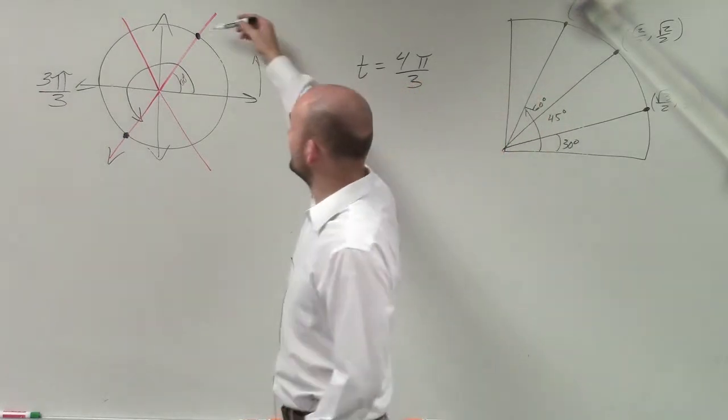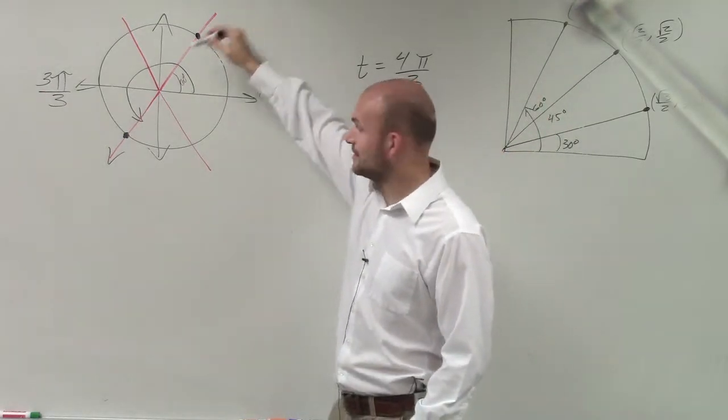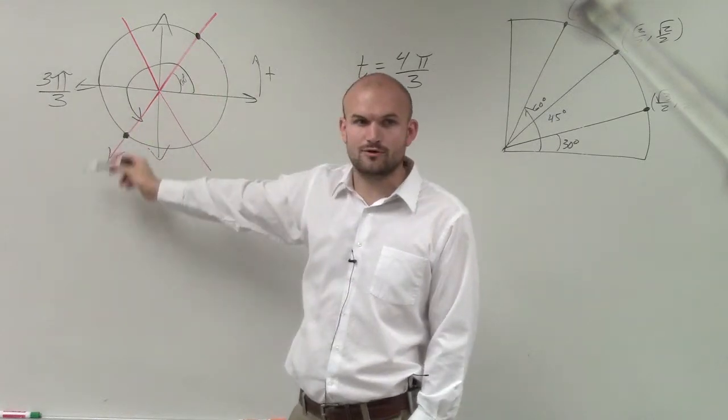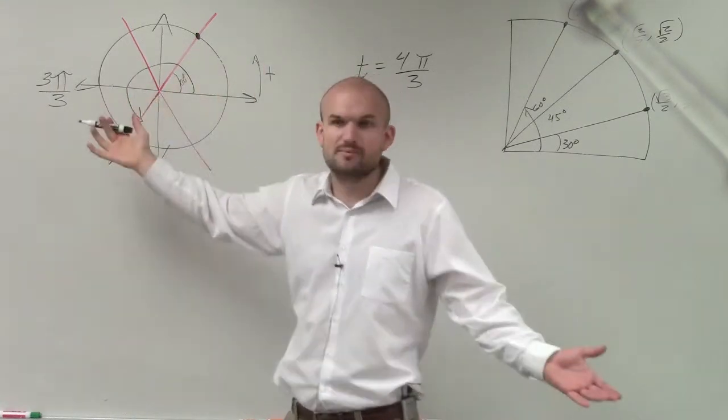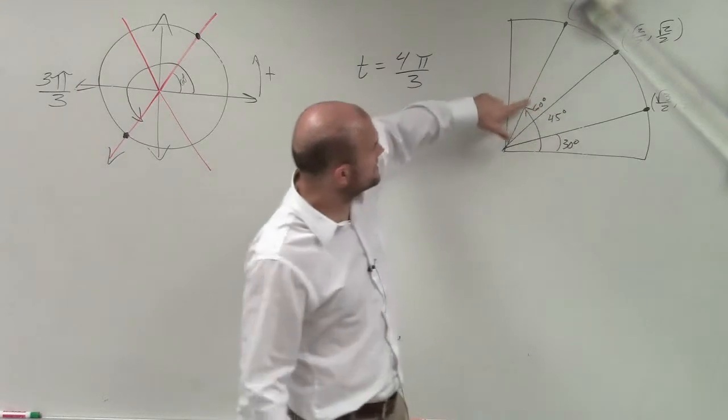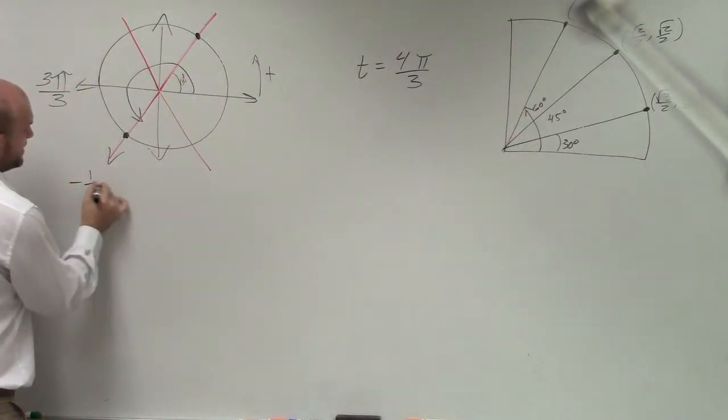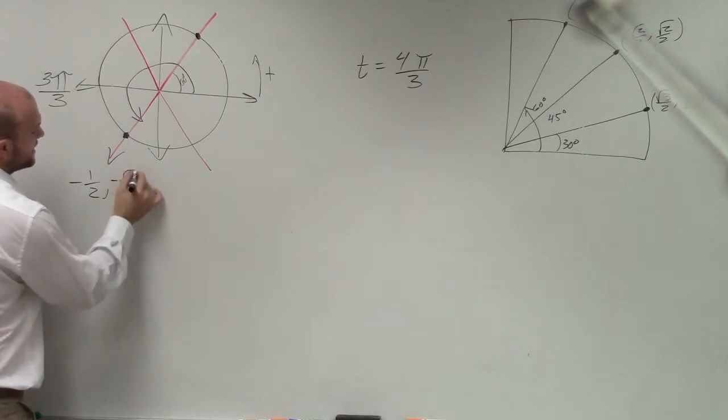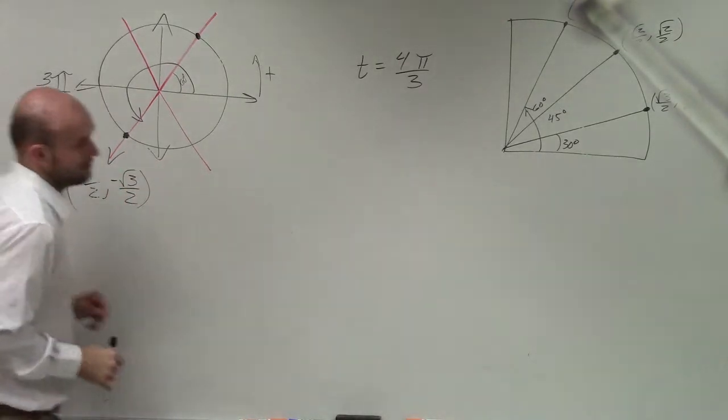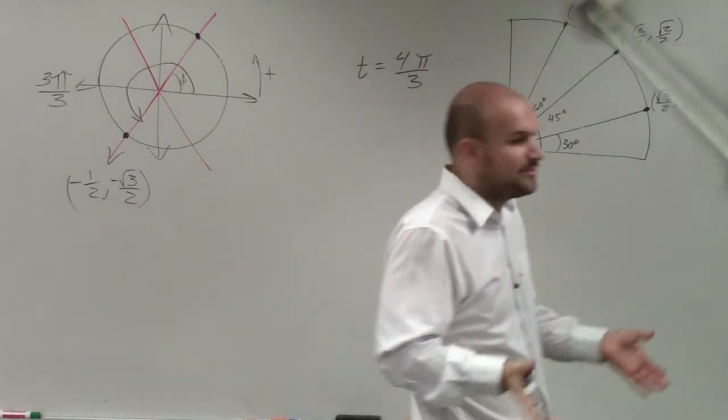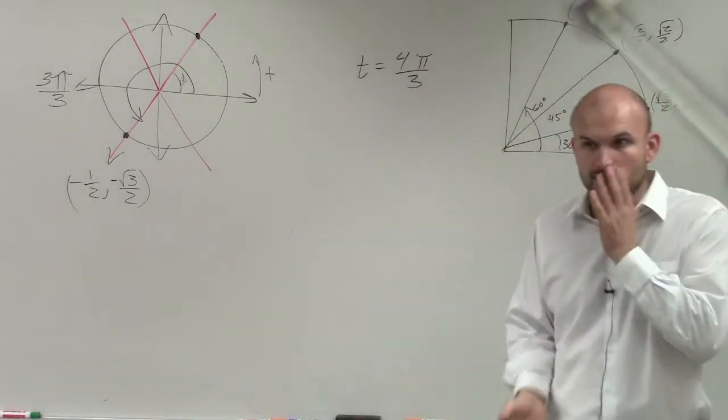Therefore, if this is in the first quadrant and this one's in the third quadrant, how do my x and y coordinates change? They're just going to both be negative. So I look at this, I say that's 60 degrees. Therefore, this coordinate point is just going to be -1/2 comma -√3/2. It's the exact same point, but it's just going to be negative now.